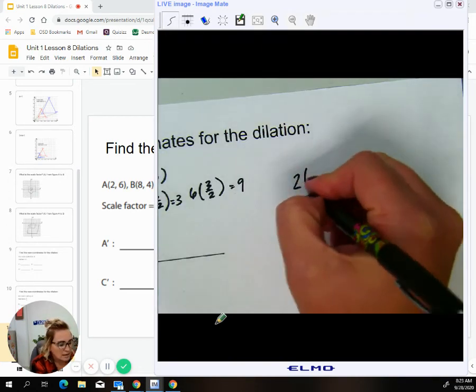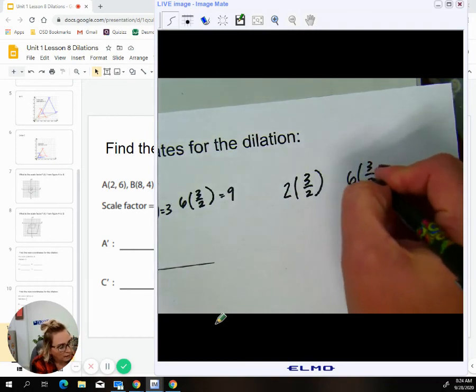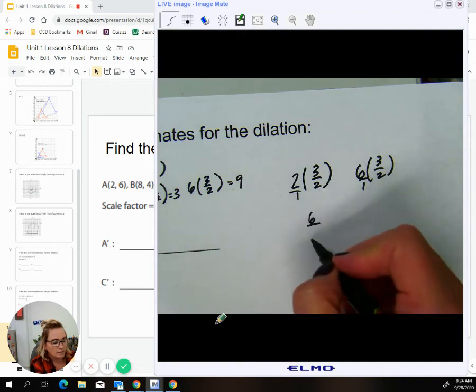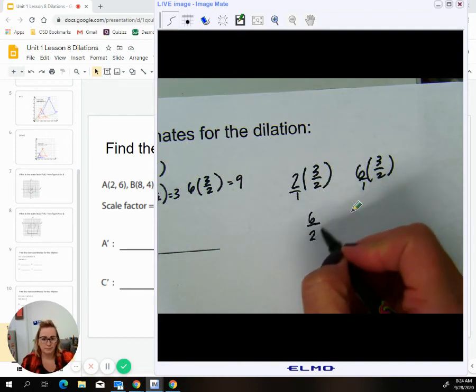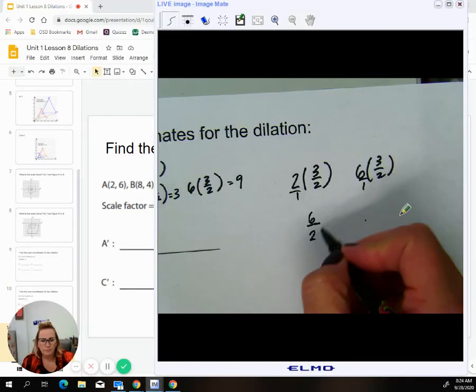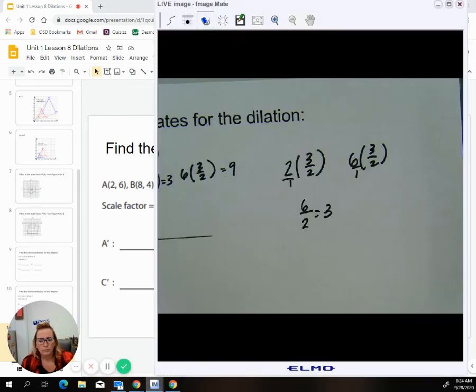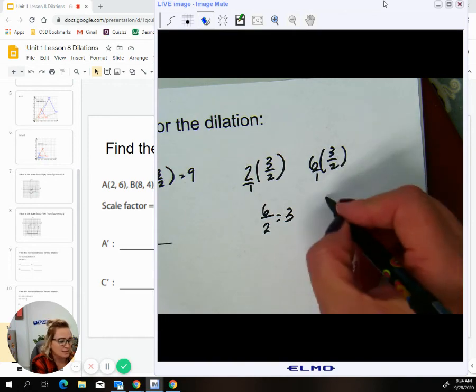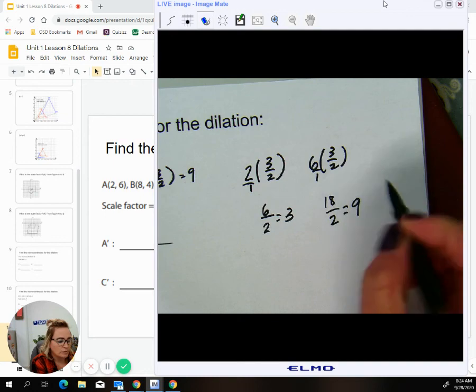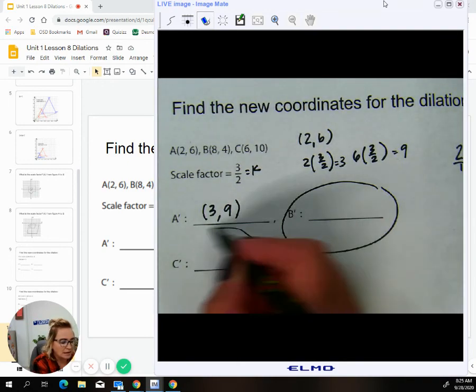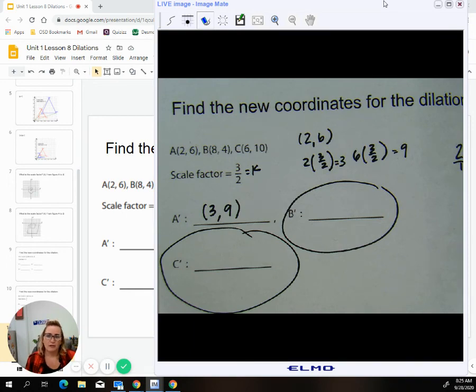Another way you could recognize that is if you were to put a one under here and make them both into fractions. So you would have two times three, which is six, one times two, which is two, which then reduces to three. Same thing would happen here. Six times three is eighteen, one times two is two. Eighteen divided by two is nine. So you'll notice that you're going to get the same answers no matter what. So I'd like you guys to try to find B and C for this scale factor of three halves.